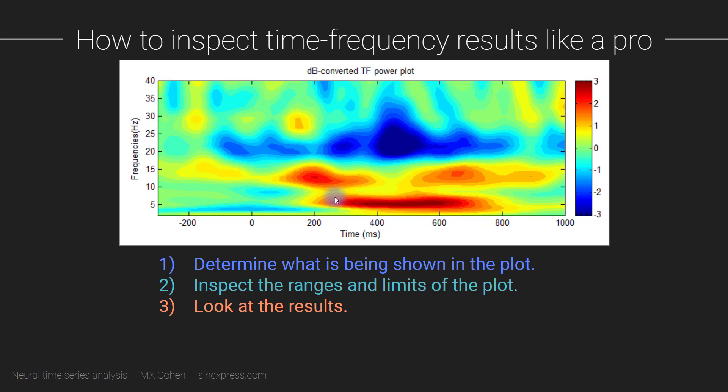And then we see a couple of other features here, that all tend to be a little bit band limited. So they are existing in a narrow frequency band, so narrow on the y-axis. That is relevant for interpreting time-frequency features, because to interpret something as an oscillation, as a narrow band activity, you want it to be narrow in the frequency range, so limited on the y-axis.